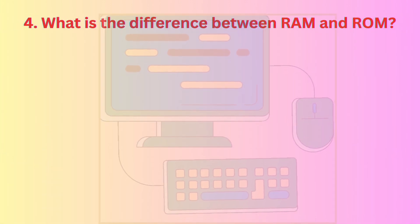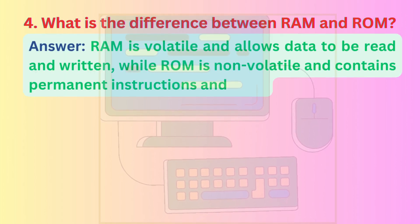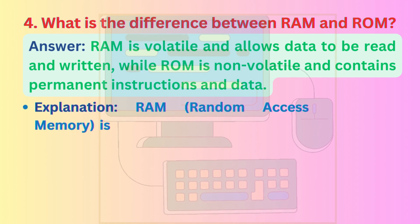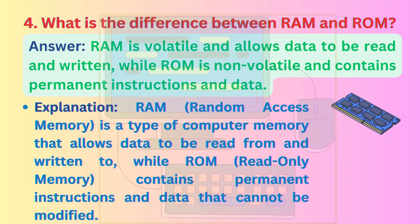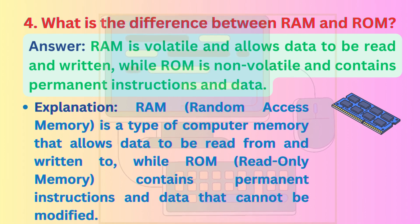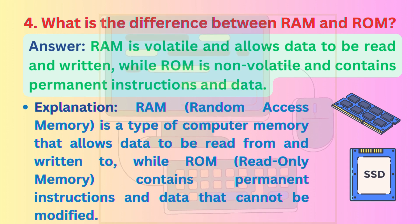Question 4: What is the difference between RAM and ROM? Answer: RAM is volatile and allows data to be read and written, while ROM is non-volatile and contains permanent instructions and data. Explanation: RAM (Random Access Memory) allows data to be read from and written to, while ROM (read-only memory) contains permanent instructions and data that cannot be modified.